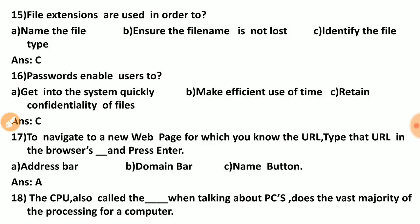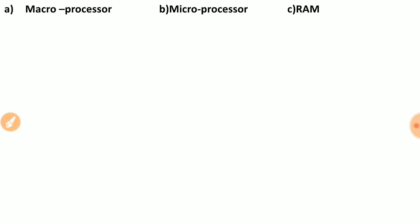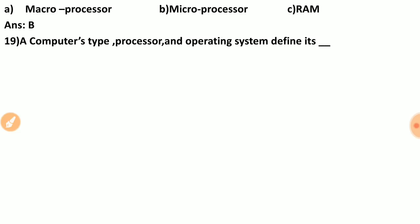Question eighteen: the CPU is also called the dash when talking about PCs and does the vast majority of processing for a computer. CPU is also known by another name — options are macroprocessor, microprocessor, RAM. The correct answer is B — microprocessor.